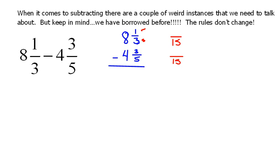We do the same thing to the top: 1 times 5 equals 5. On our second fraction, we multiply by 3 to get 15, so 3 times 3 equals 9. Now I'll recopy my whole numbers, and let's start doing the subtraction.